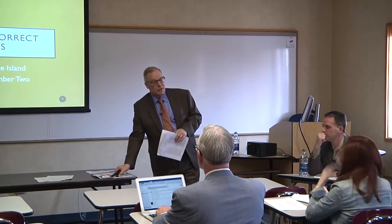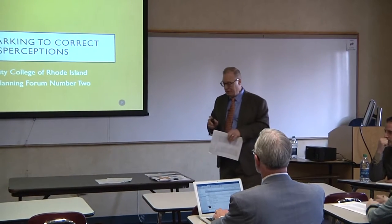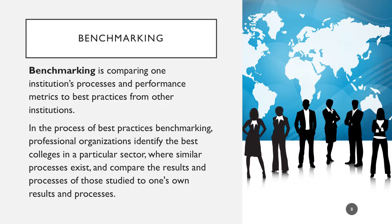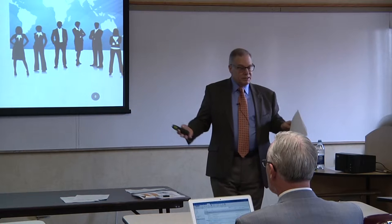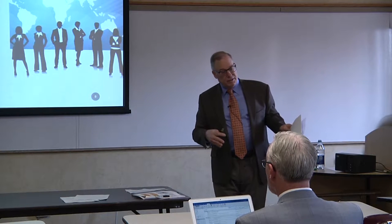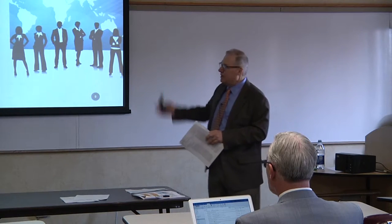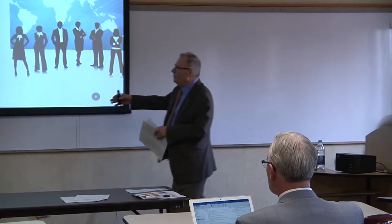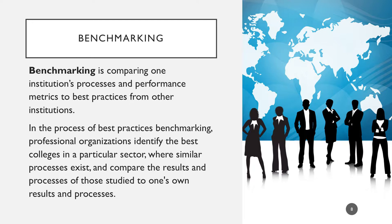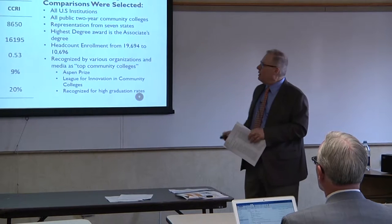Let's go into some of these misperceptions. One way to look at whether your information is consistent with what's happening at other community colleges is what we call benchmarking — comparing your processes and performance to other institutions. When you go through accreditation, external people come in and look at the way you do things. So benchmarking is just one of many ways. We're trying to identify the best colleges in a particular sector and compare those results to your own processes.